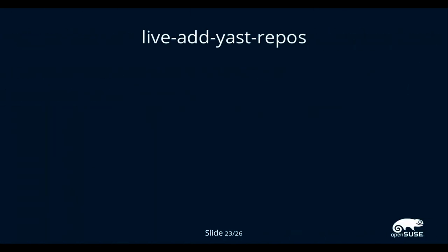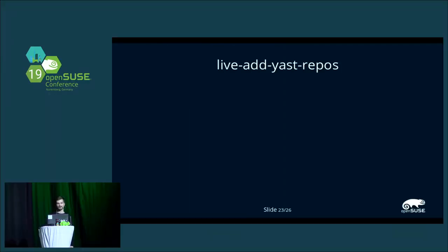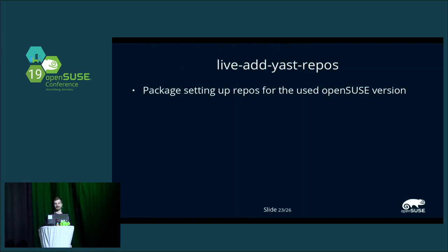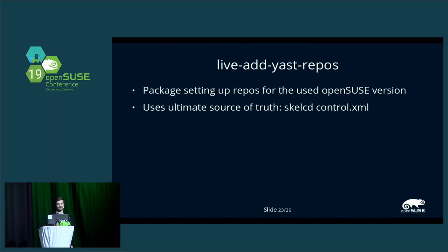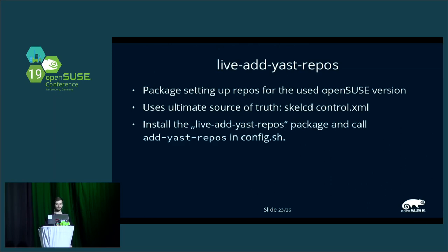Another useful package is live-add-yast-repos, which you definitely want to use if you build your own custom image not based on an existing container. It is a package which sets up the official OpenSUSE repositories in your image build by using the SCC control XML used during YaST installations. It adds the fitting repositories for your distribution — if you build against Leap, it pulls in the Leap OSS repository; if you build against Tumbleweed, it pulls in the Tumbleweed OSS repositories. This also works for different architectures. You use it by installing the live-add-yast-repos package in your Kiwi file and calling add-yast-repos in config.sh — the package can then be removed again, but you can keep it if you want, it's just a kilobyte.